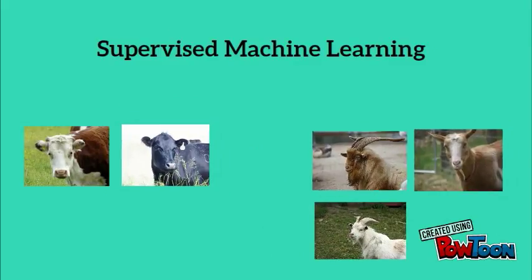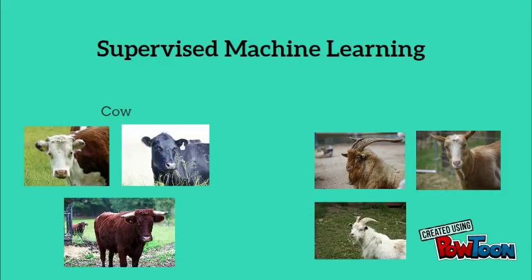Each image is part of a training data set. We give each image of a cow or a goat a label. As you can see, this is a very manual process.